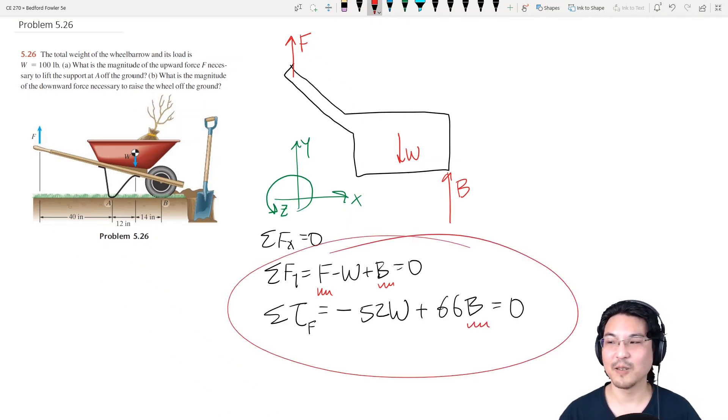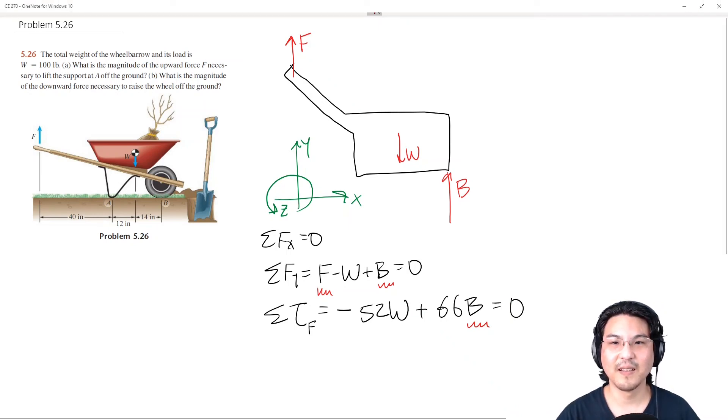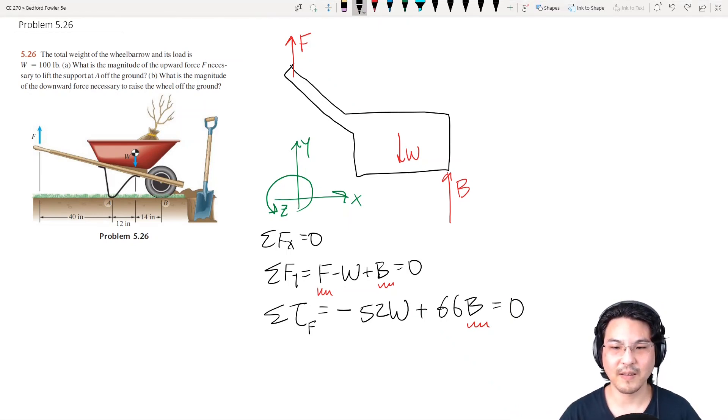Two equations, two unknowns. How do you solve? Right, I would solve this one first. Okay, so B would be, and W is 100.